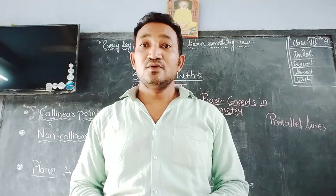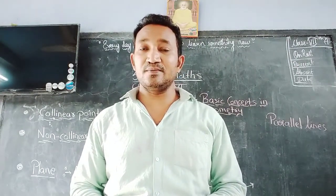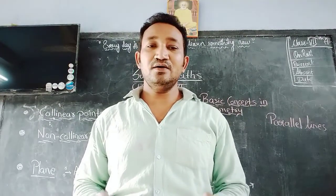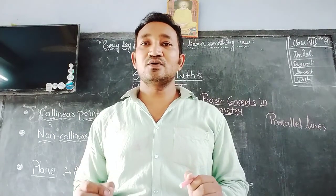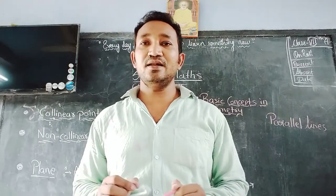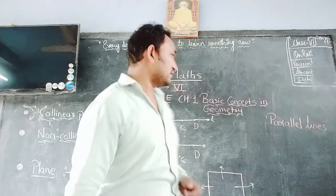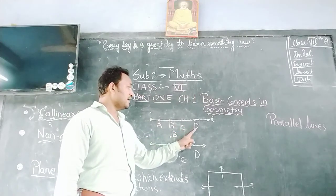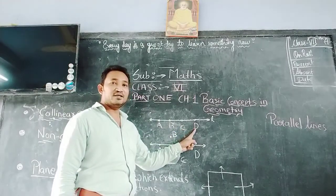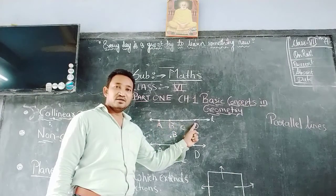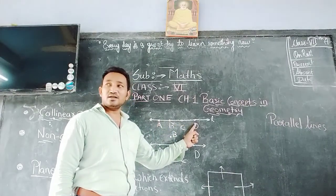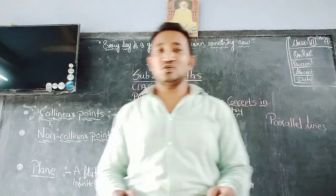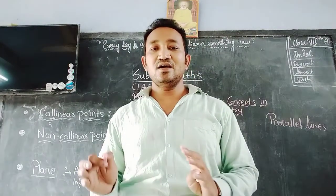Children, what are collinear points? Three or more points which lie on the same line are called collinear points. Look here on the board — point A, point B, point C and point D all lie on the same line. Hence they are called collinear points.